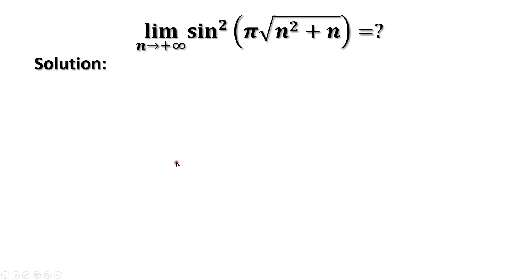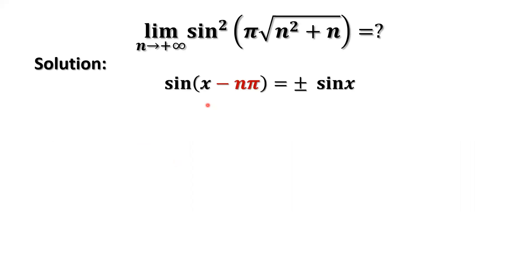How do we derive the limit? We are going to apply the following simple and important identity: sine of x minus n times pi equals positive or negative sine of x.